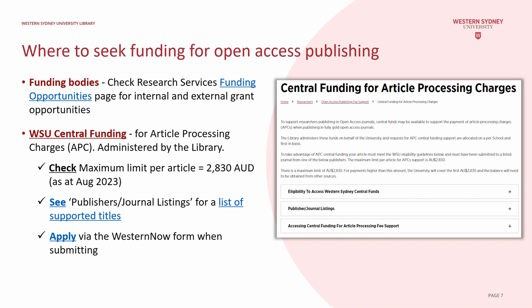If you are a Western Sydney University corresponding author interested in applying for open access publishing fee support, check your eligibility for Western Sydney University central funding. Visit the library website, go to the researchers menu and select open access publishing fee support. The cap on central funding per article is two thousand eight hundred and thirty Australian dollars. Check the publisher and journal listings for journals available under the publish agreement. If you find a suitable journal listed, you can apply for funding when or two weeks before you submit your article, by clicking on accessing central funding for article processing fee support. You'll be prompted to log into Western Now to complete an online application form.